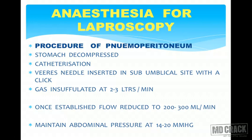Once pneumoperitoneum is established, gas flow is reduced to around 200 to 300 ml per minute and maintained. Abdominal pressure is maintained at around 14 to 20 mmHg. In summary: insert the Veress needle perpendicular to the skin at the sub-umbilical site until you get a definite click indicating entry into the peritoneal cavity, then insufflate at two to three liters per minute until distension is achieved, then maintain at 200–300 ml/min.